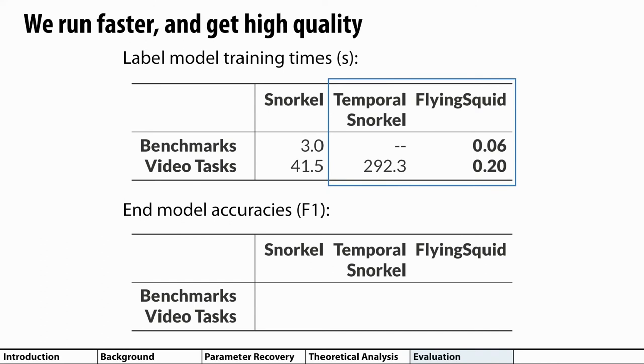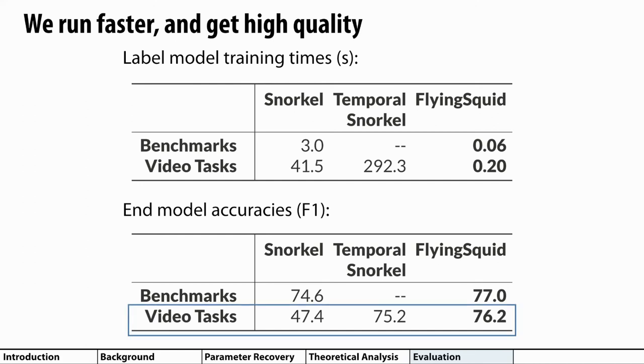You might expect a trade-off between speed and accuracy, but we actually found that we could often achieve the same or better performance as previous approaches. We want to highlight performance on the video tasks in particular. Getting high performance on video tasks requires modeling temporal dependencies, which is why there's such a big gap between the first and second columns here. But these temporal dependencies are precisely what makes the conventional SGD technique slow. With FlyingSquid, we can get the high performance of modeling temporal dependencies without paying a high training cost.